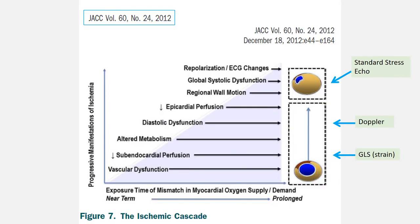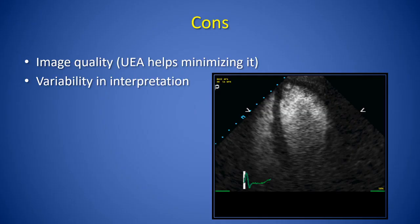The sensitivity of conventional stress echo is dictated in part by the fact that global systolic function and regional wall motion abnormalities occur somewhat late in the ischemic cascade. The added assessment of strain imaging in addition to diastolic dysfunction with stress can move this test further up the ischemic cascade and has the potential to improve sensitivity. Detection of regional wall motion abnormalities by stress echo can lead to variability in interpretation, and extensive training and experience are needed. Imaging quality has greatly improved with ultrasound enhancing agents, and there are increasing attempts to improve the sensitivity of the test.